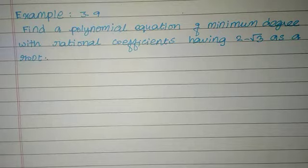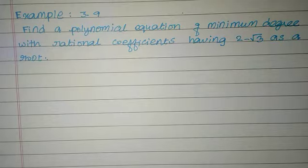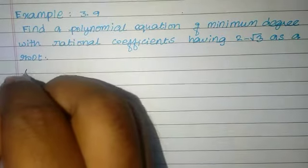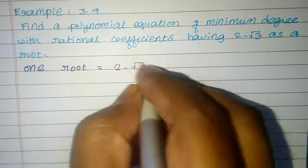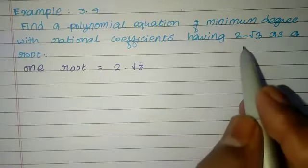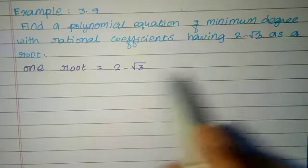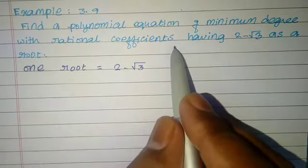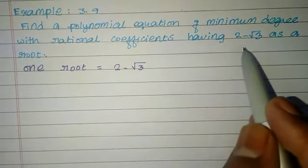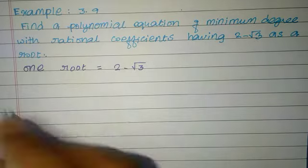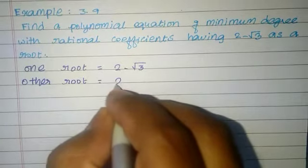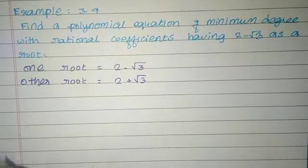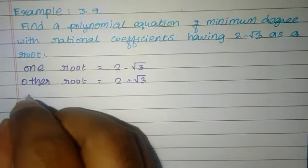Example 3.95: Find a polynomial equation of minimum degree with rational coefficients having 2 minus root 3 as a root. Since one root is 2 minus root 3, which is an irrational root, rational coefficients are very important. For irrational roots with rational coefficients, the other root must be the conjugate: 2 plus root 3. So we find the quadratic equation with these two roots.